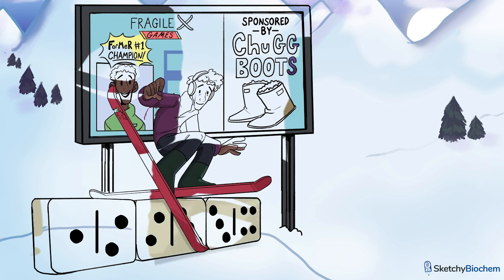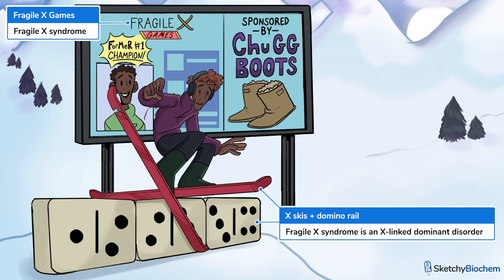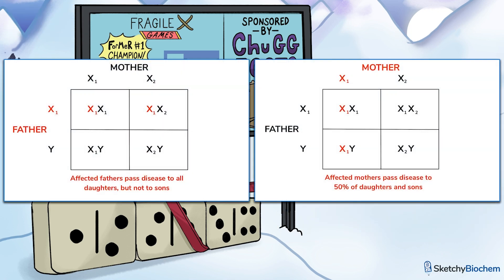Fragile X is inherited in an X-linked dominant pattern, so it should come as no surprise to see this pro skier doing an XX extreme trick on the domino pattern rail. As a reminder, only one copy of the mutant allele is necessary to cause Fragile X in the offspring of an affected parent. We've included a Punnett square to show the probability of having a child with the disease when one parent already has the disease, assuming it's X-linked dominant. Note that affected fathers always pass the disease to their daughters, while affected mothers pass the disease 50% of the time to their sons.